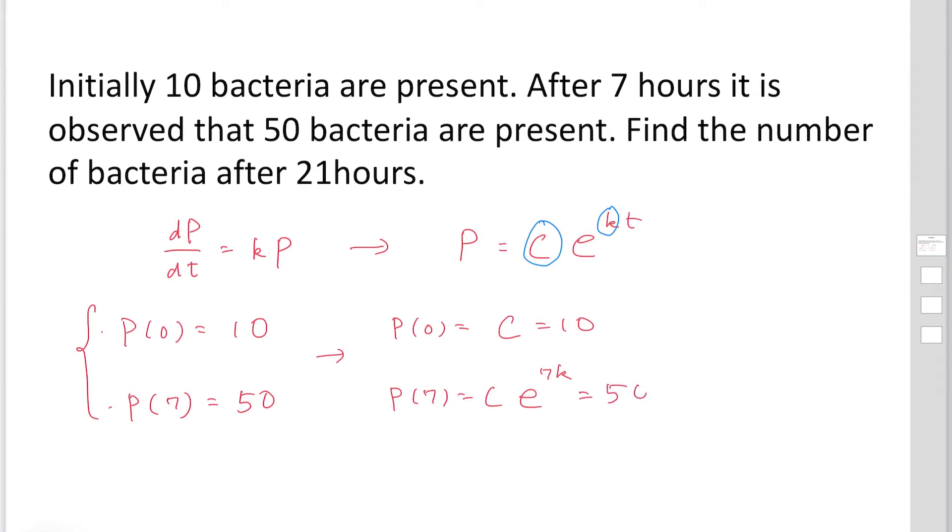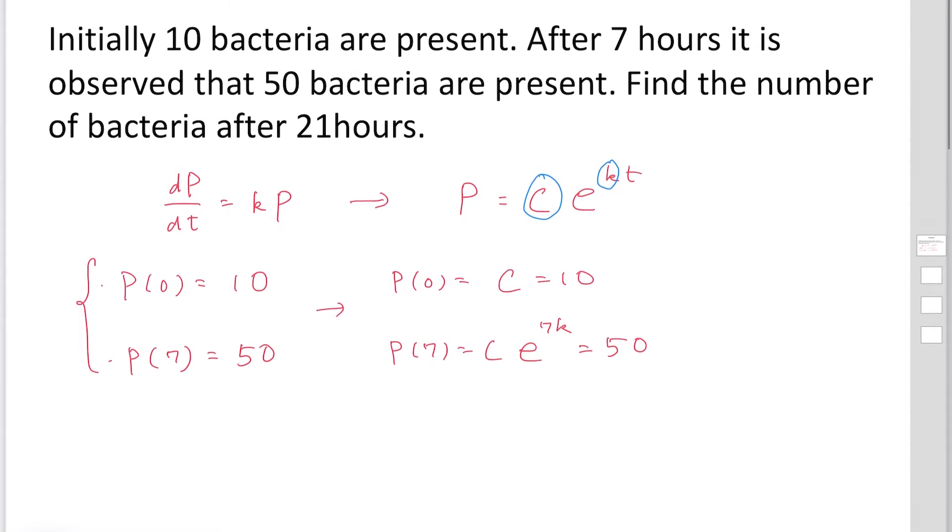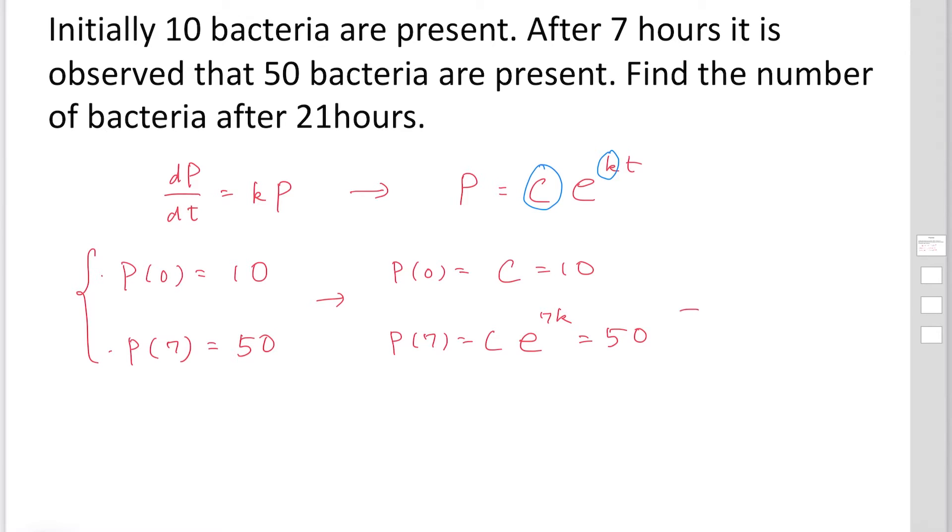P at t equals 7, so C exponential 7k equals 50. Exponential 7k equals 5. We obtain these two unknown constants.